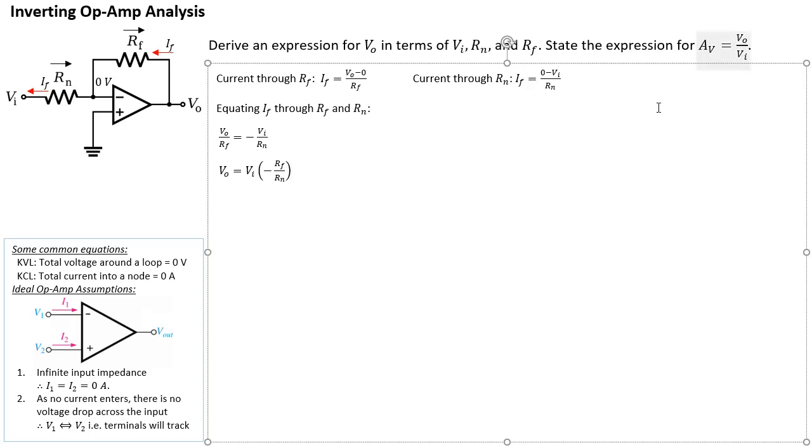Now, so the other expression that I'd like to show you is about AV. Well, AV is the voltage gain, and it's always defined as the output voltage divided by the input voltage. So to get that, we just simply have to move VI across to the left to get VO over VI. So the next line, I'll just say AV is just simply equals to VO over VI, which is equal to negative RF over RN. So that's what we need to do in order to answer this question.